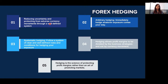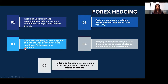The ultimate goal is to reduce the uncertainty related to rates rather than predicting where rates will be in the future, since no one can predict rates. There are two kinds of hedging: arbitrary hedging, where we immediately hedge whatever exposure comes our way, and systematic hedging, where we follow well-defined rules and conditions for hedging our exposures.